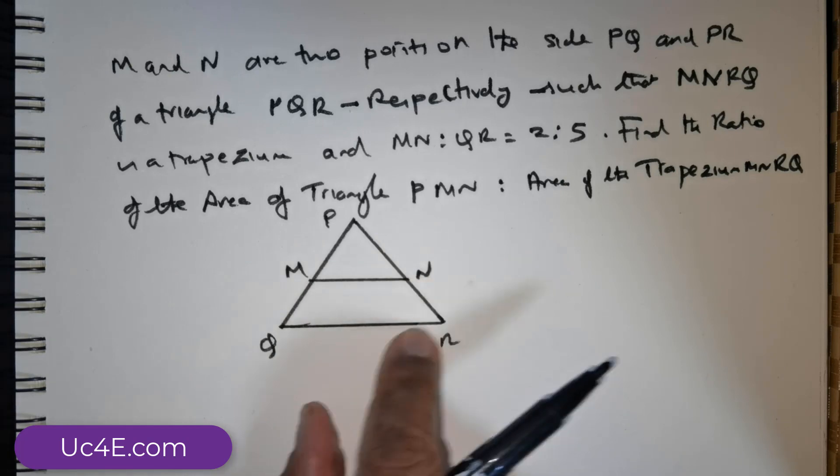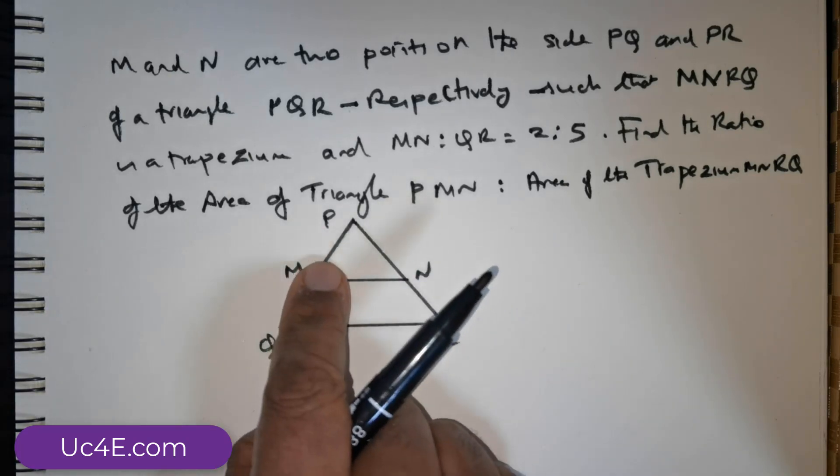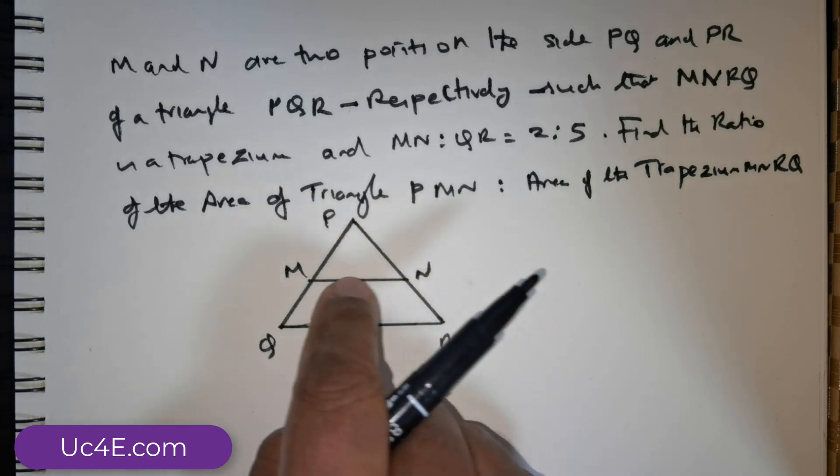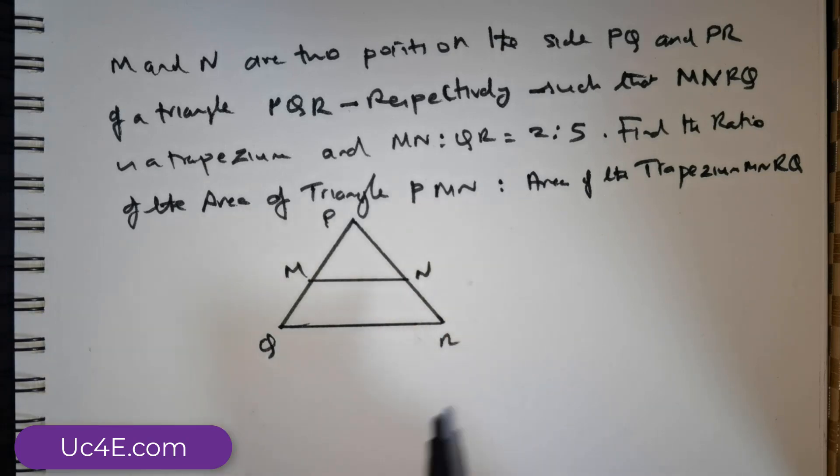This is M, this is N and this is the trapezium MNRQ. We are expected to find the ratio of the area of the triangle PMN to the trapezium MNRQ. So that's required.